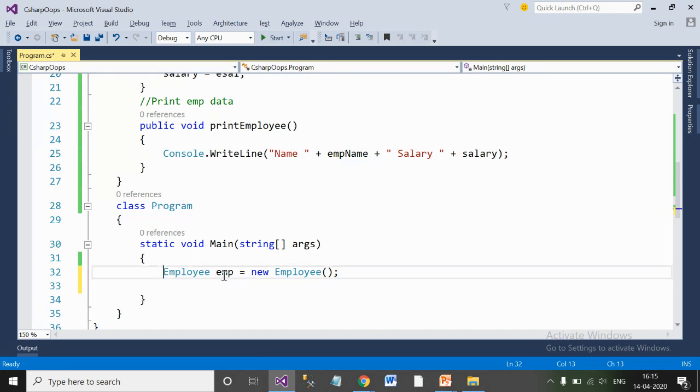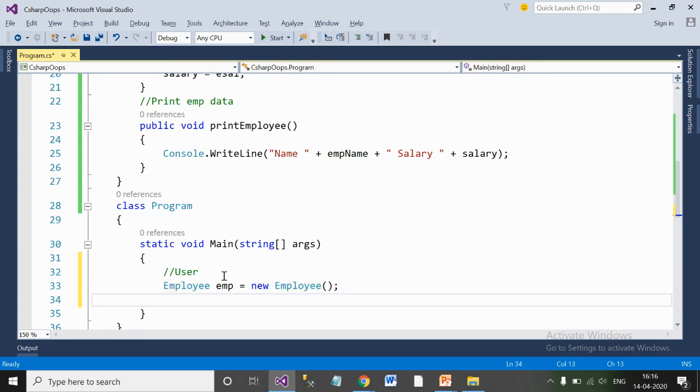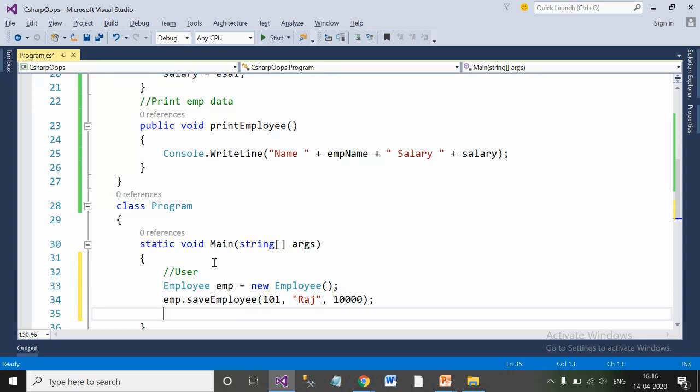This is the interaction of a user with your entity. I have created an object of an employee class. When employee.saveEmployee function gets called, I need to pass the employee ID, the employee name, and the employee salary. I need not worry about what save employee function is doing inside it.